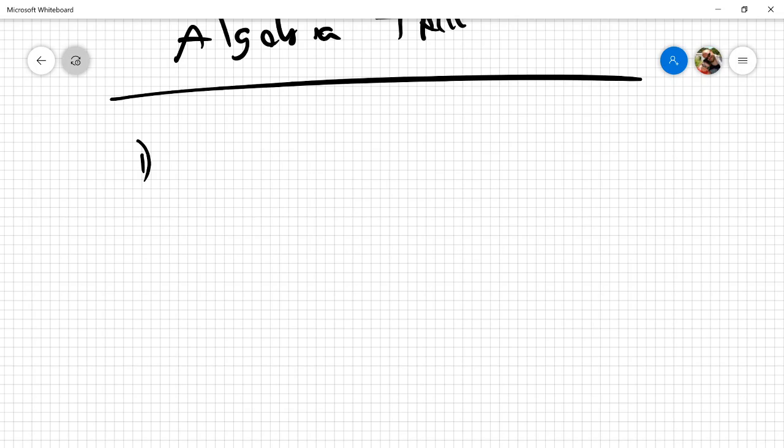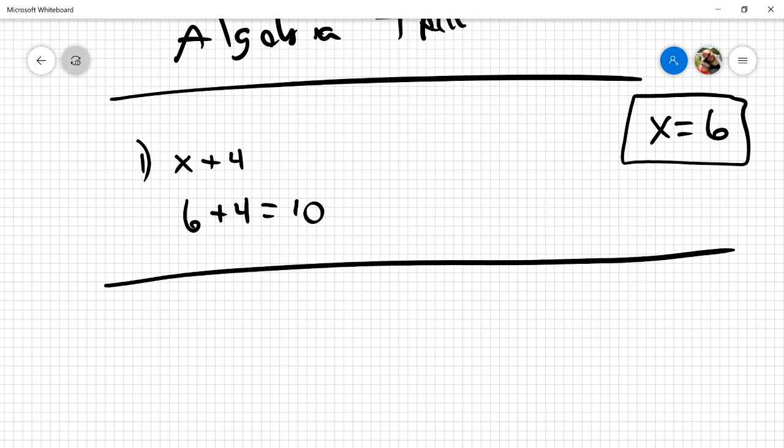All right, so number one is x plus four. So remember, I'm just going to put it over here, x equals six. Now I'm going to substitute the six for x. So I'm going to rewrite my equation, six plus four, and that equals ten. That was pretty straightforward. Got that one.